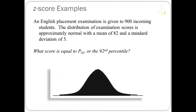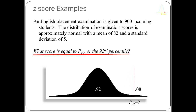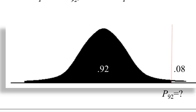The last problem we'll go through is a percentile problem. We're asking: what score is equal to P sub 92, or the 92nd percentile? Graphing this out, the red line on the right represents the 92nd percentile. The 92nd percentile divides the distribution so that 0.92 lies below that value — because 92nd percentile means 92% of all cases had values at or below that score — and 0.08 lies above. P sub 92 equals question mark: that's the problem.